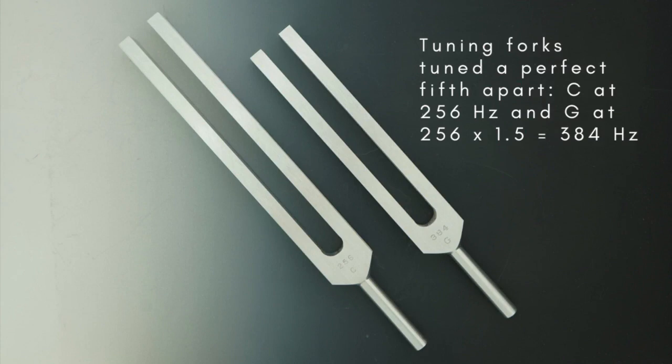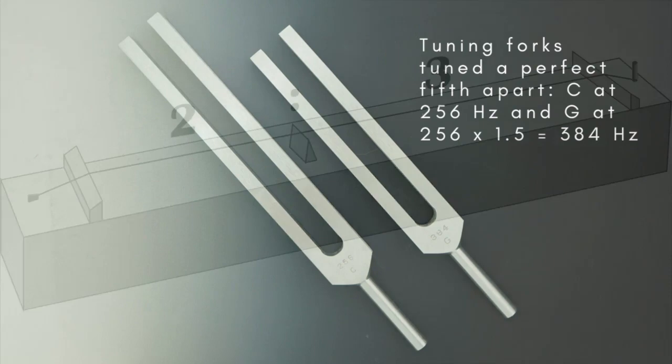In an earlier video, I looked at the system of Pythagorean tuning and showed how it was all based on the interval of a perfect fifth. In this video, I want to explain some of the problems of this type of tuning, which eventually led musicians to adopt new systems of tuning and intonation. And the particular problem I want to focus on is something called the Pythagorean comma.